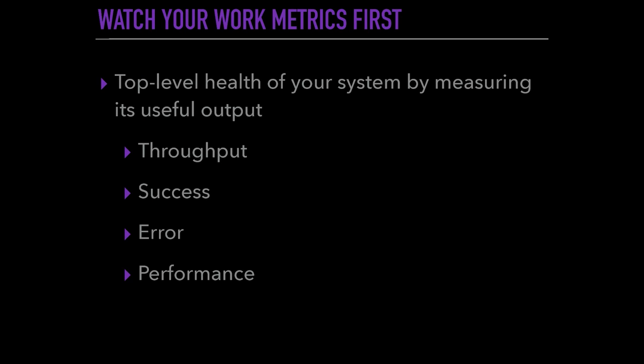You might have various kinds of metrics to report. But the important ones are what I would call the work metrics — basically the throughputs, number of successes, errors, the performance in general. All of these top-level metrics of your system's health are the ones you want to look at first.